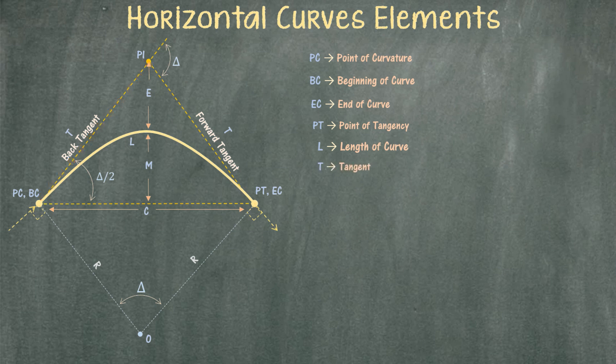Now, if I take your attention to the last point on the curve, or EC, we can apply the same thing. That is, if we were to do something similar at the end of the curve and extend the straight line coming from the road beyond the point EC, then we will have created the forward tangent.